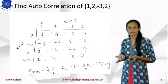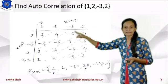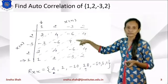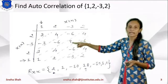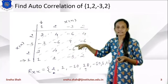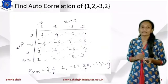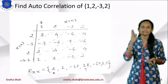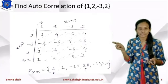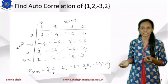Now the operation will remain the same. 2 multiplies with all the terms: 2×1=2, 2×2=4, 2×(-3)=-6, 2×2=4. Next, -3 multiplies: -3×1=-3, -3×2=-6, and likewise for all the terms. Now we draw the slant line and within each slant line region we add the terms. So the answer is Rxx because we found the auto-correlation of x with itself.